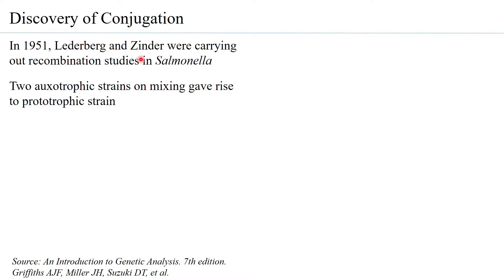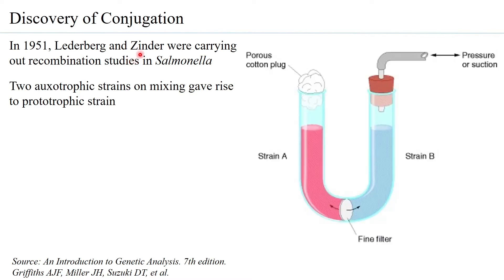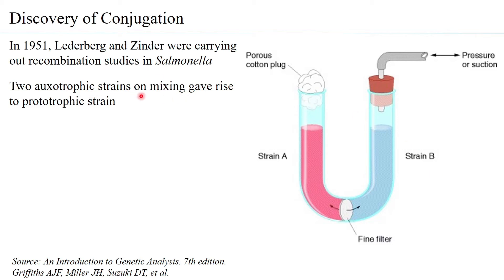Lederberg and Tatum carried out another experiment using a specially designed tube called the U-tube, which contained a fine filter between the two arms. One arm contained one strain and the other arm contained the other strain. When studying conjugation, the fine filters would not allow bacteria from each arm to move into the other, so there would be no contact of strain A with strain B, and therefore no genetic exchange or gene recombination would be observed.